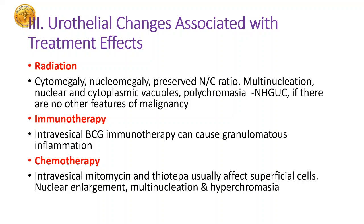Continuing with category one — negative for high grade urothelial cancer — urothelial changes that cannot be attributed to treatment effects, whether radiation, BCG immunotherapy, chemotherapy (mitomycin, thiotepa, etc.) should be categorized not as atypical but as negative for high grade urothelial cancer. Just like other systems we have cytomegaly, nuclear enlargement, multinucleation, vacuolation in cytoplasm and nucleus, and no overt features of malignancy. Please remember this should not be called atypical or suspicious — they should be called negative for high grade urothelial cancer. BCG immunotherapy can cause granulomatous inflammation.